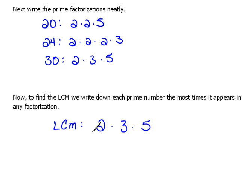Now let's look at our 2s first. Here we have 2 of them, here we have 3 of them, and here we have one of them. Well, 3 is more. So the most times it appears in any factorization would be right here. It appears 3 times. So we're going to use that 2 cubed.